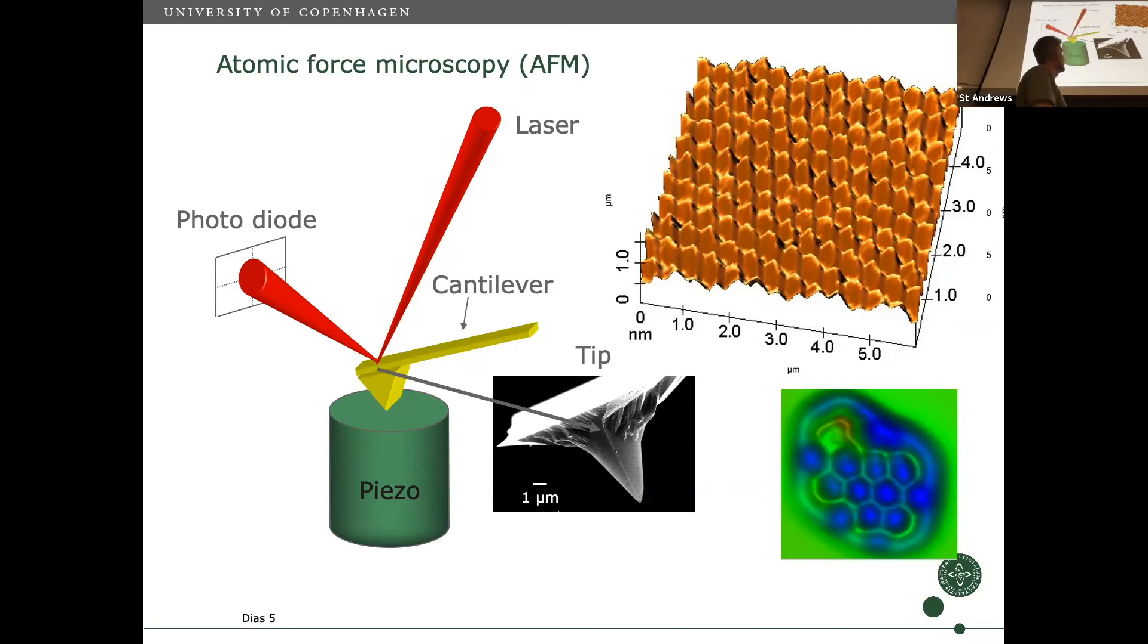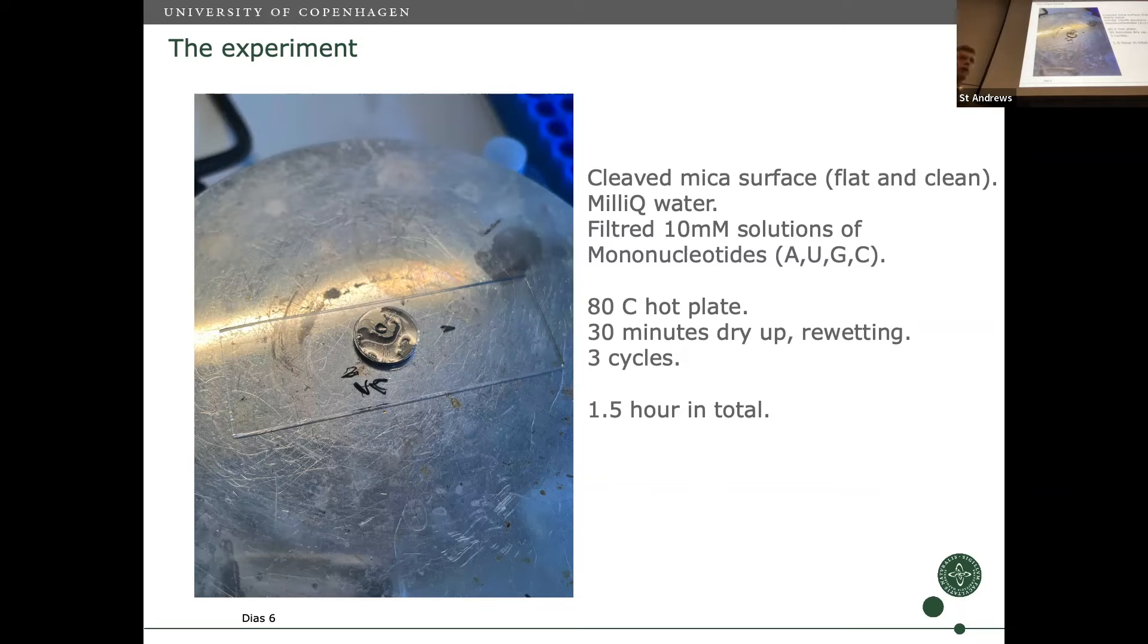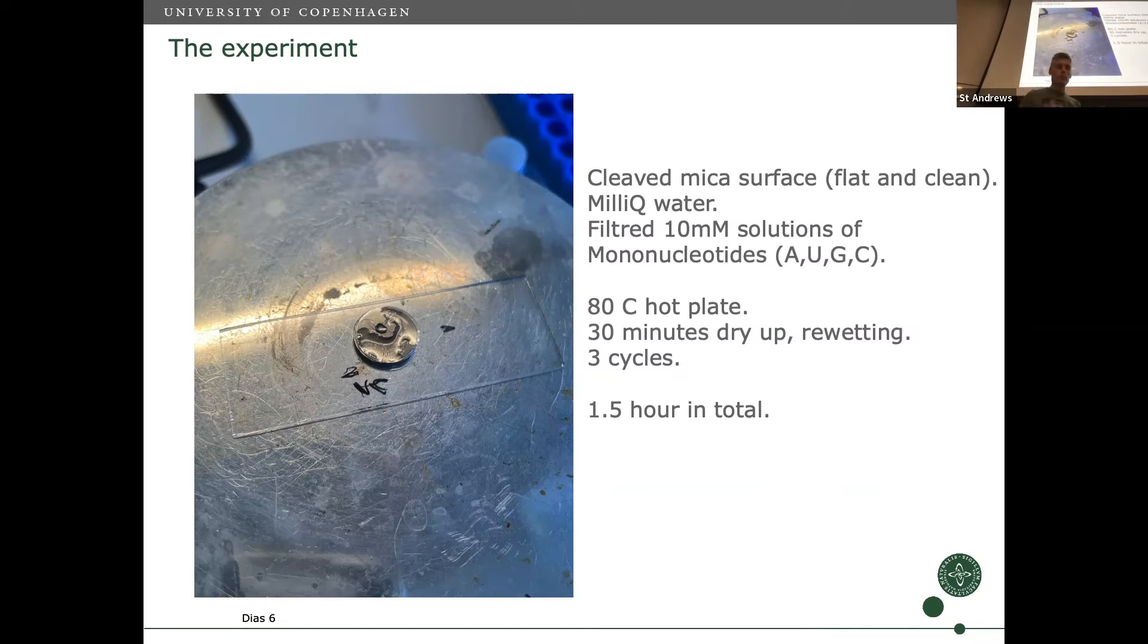I wanted to combine David and Bruce's theory with my tool to see if we can see the first steps of life in the lab. The experiment is embarrassingly simple: taking a cleaved mica surface which gives an extremely clean flat surface, using very clean water and filtered solutions of the four nucleotides A, U, G, C, treating it for three wet-dry cycles on a hot plate at 80°C—30 minutes dry up, rewetting, three cycles, about one and a half hours total.